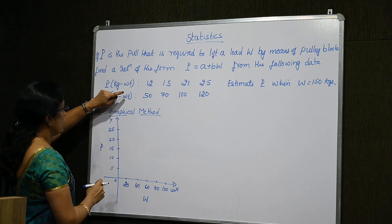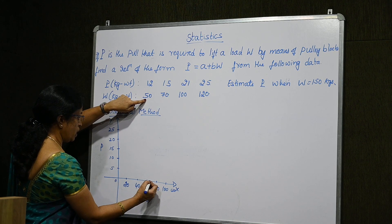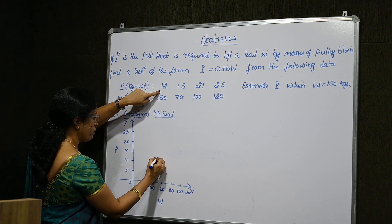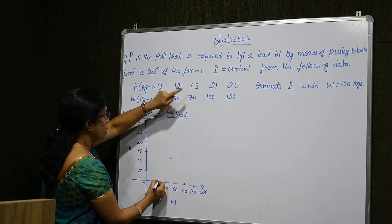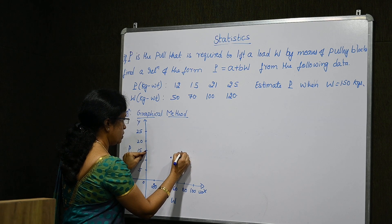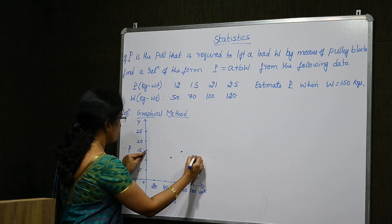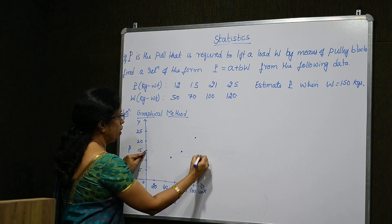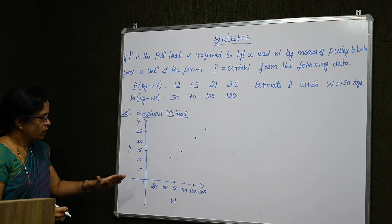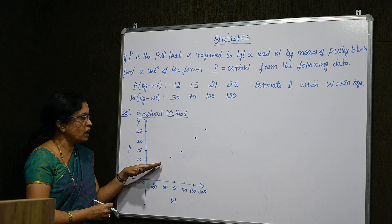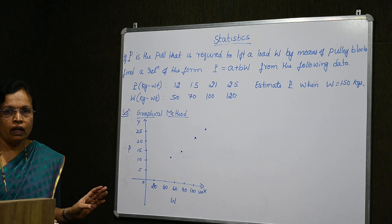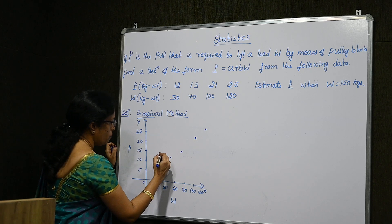Let us locate these points. When W is 50, P is 12 — that point is here. When W is 70, P is 15 — that point is here. When W is 100, P is 21, and when W is 120, P is 25. Looking at these points, they are almost in the form of a straight line — not exactly, but almost. So the best fitted curve is a straight line rather than a quadratic or exponential curve.